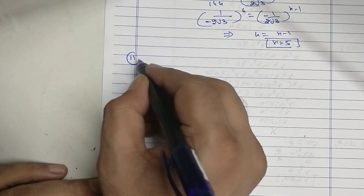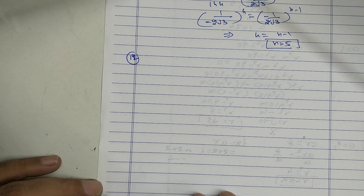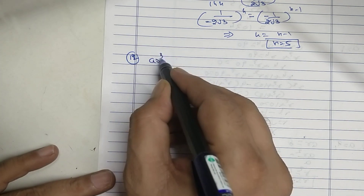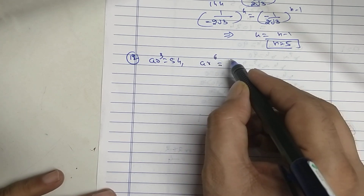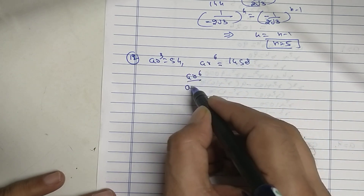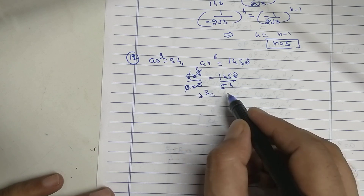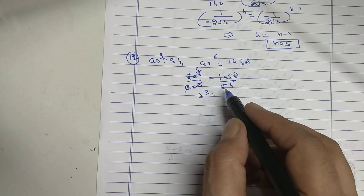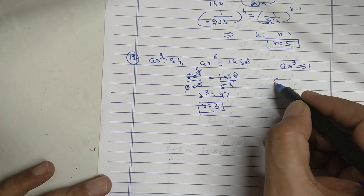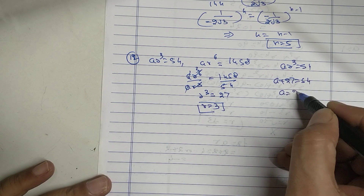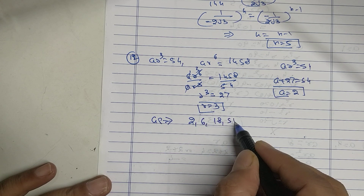Sum number 12. The 4th term AR cubed equals 54 and the 7th term AR to the 6th equals 1458. Dividing higher by lower: 1458 upon 54, A cancels, giving R cubed equals 27, so R equals 3. We know AR cubed equals 54, so A into 27 equals 54, giving A equals 2. Therefore the GP is 2, 6, 18, 54, and so on.